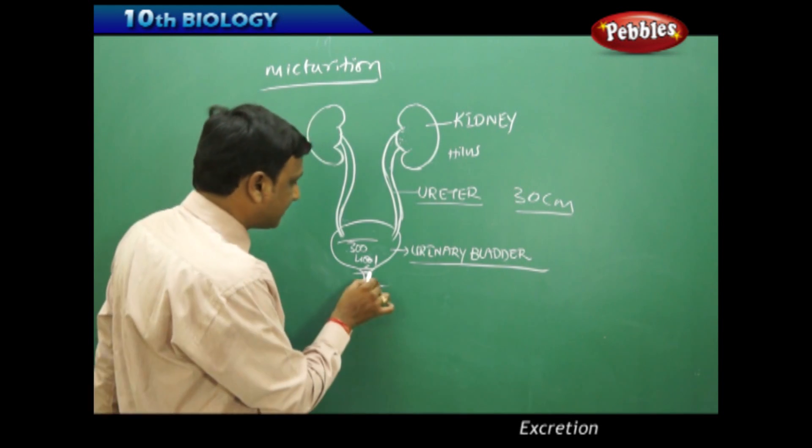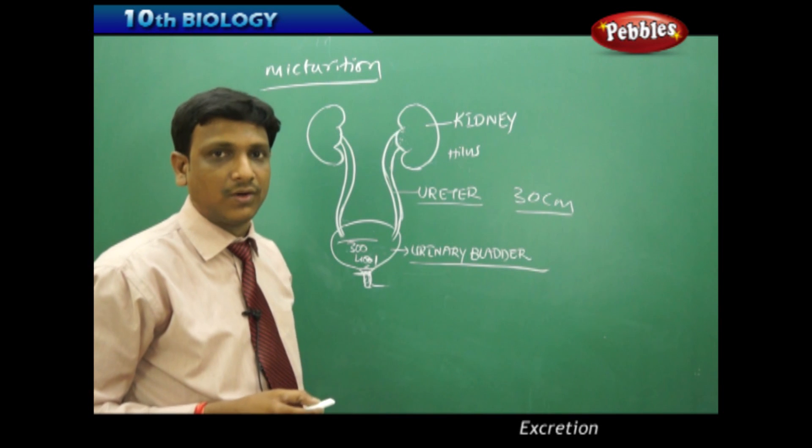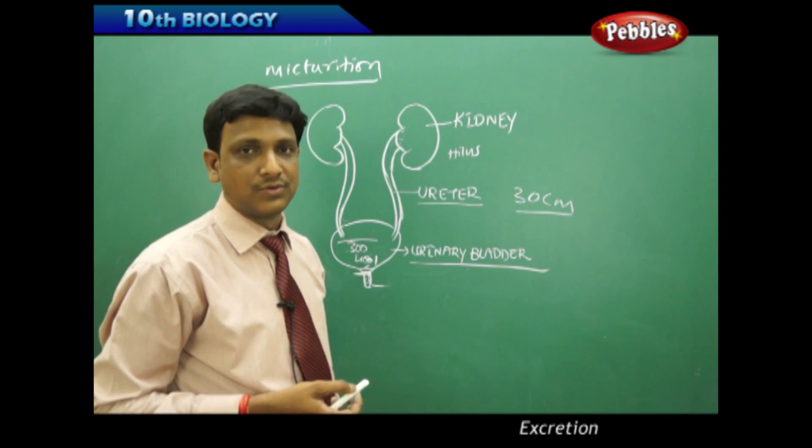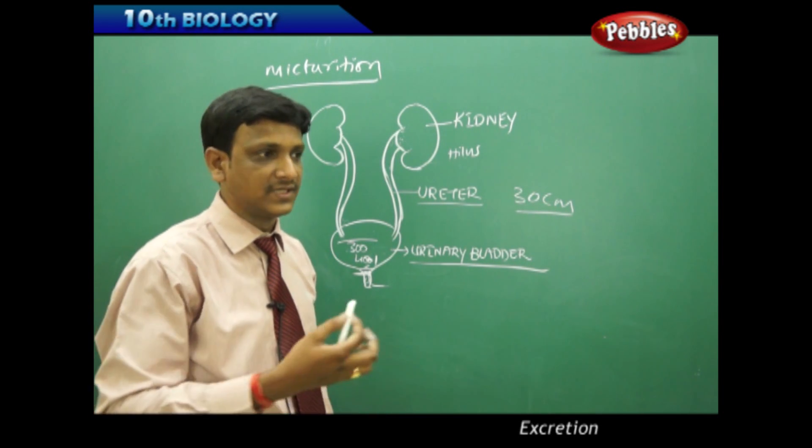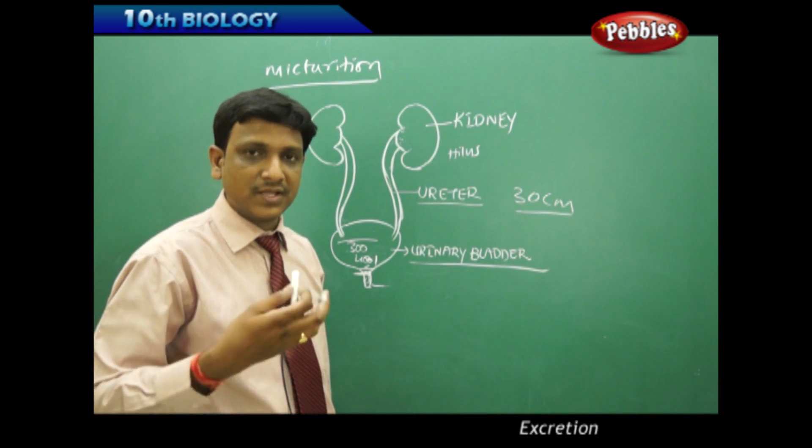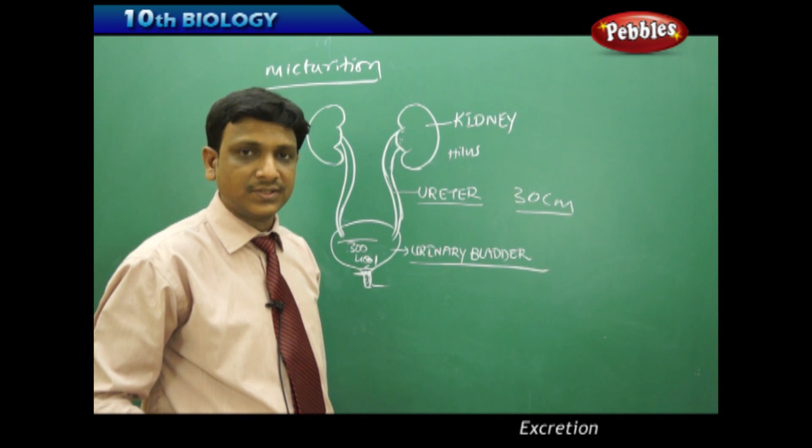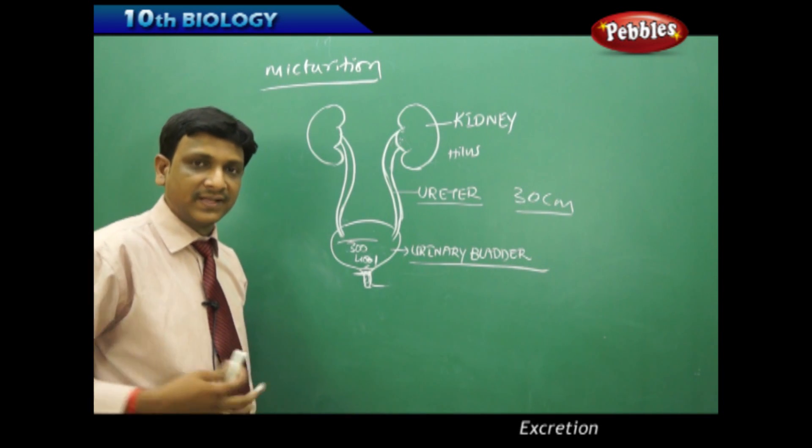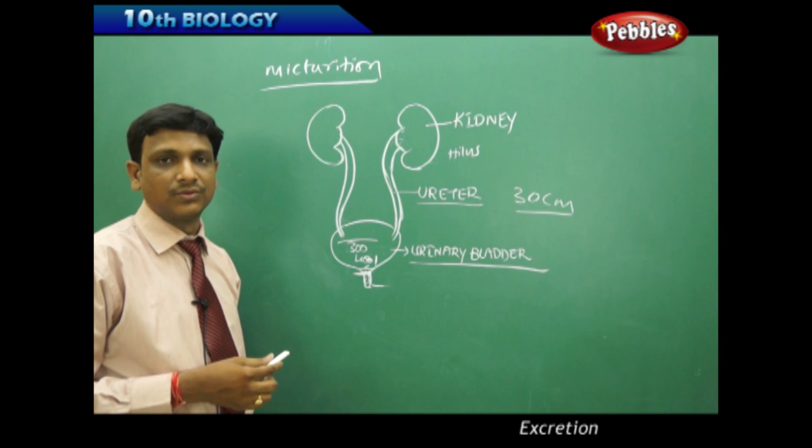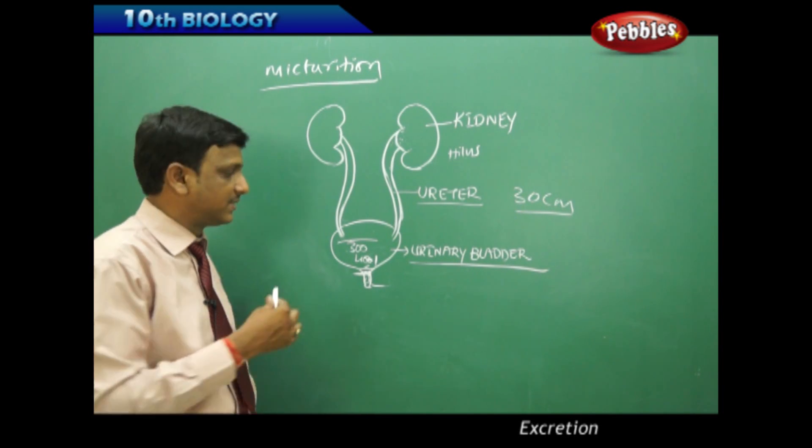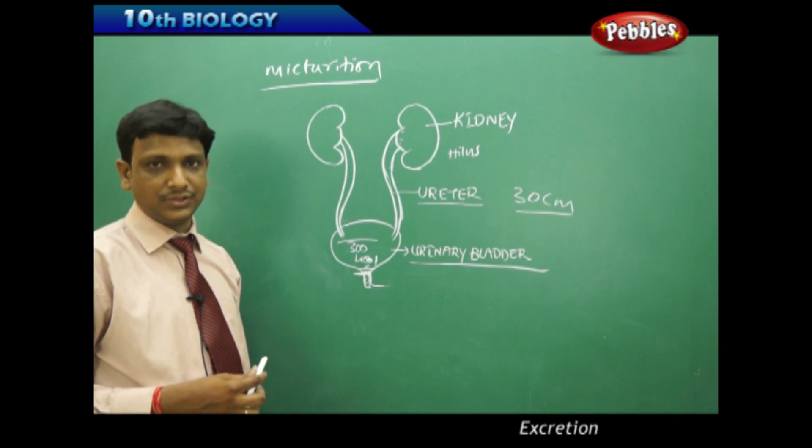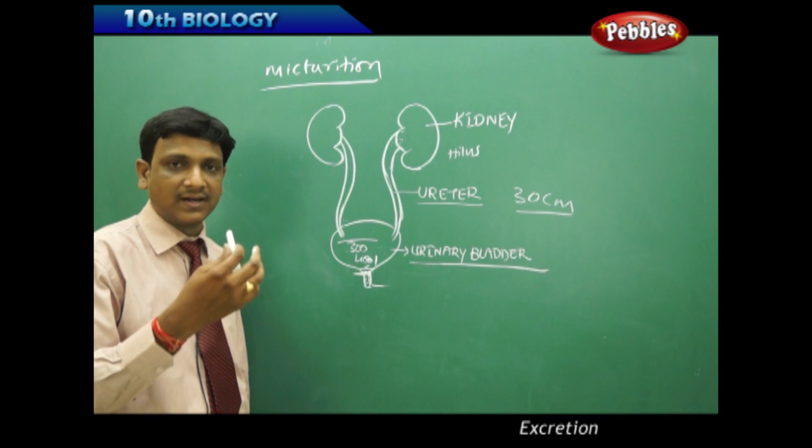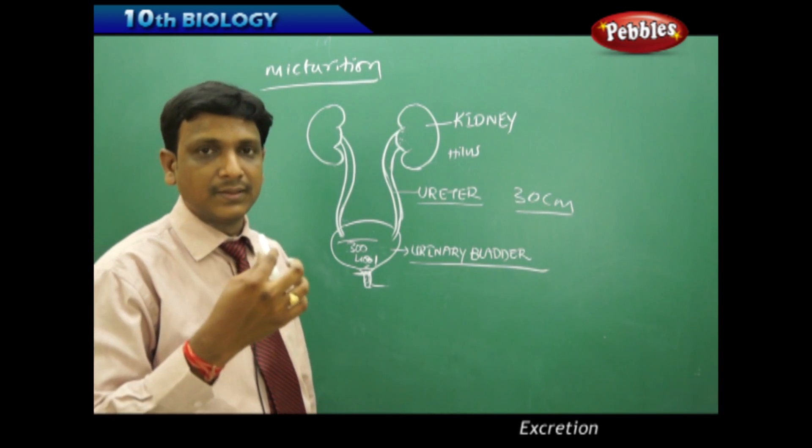The second sphincter will not allow the urine to pass down because that is under our control. Considering social conditions, we should have some facility to go and urinate. For that reason, the urine is not released immediately. It gives an urge for micturition. That is under our brain's control. Voluntarily we can relax the sphincter muscle and pass the urine. The second set of sphincter is under the direct control of the brain.